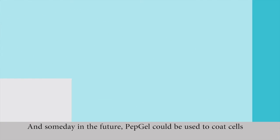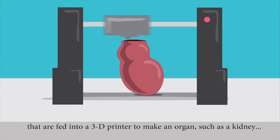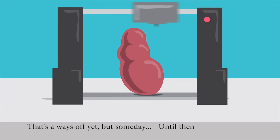And someday in the future, PEPGEL could be used to coat cells that are fed into a 3D printer to make an organ, such as a kidney. That's a ways off yet, but someday.